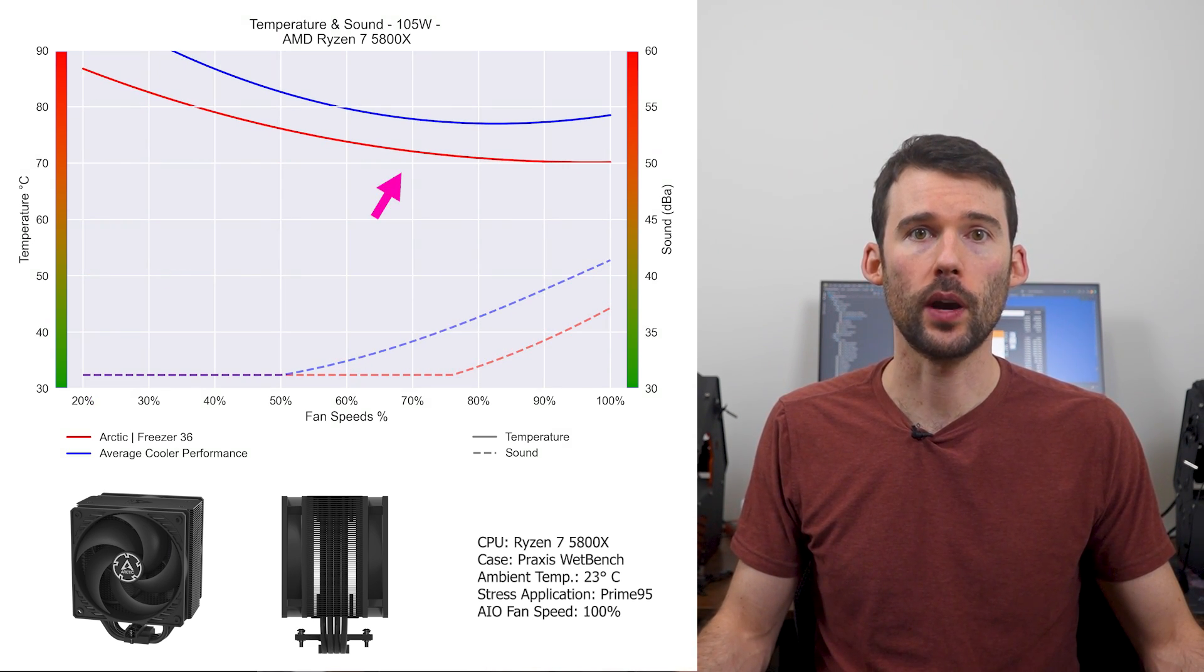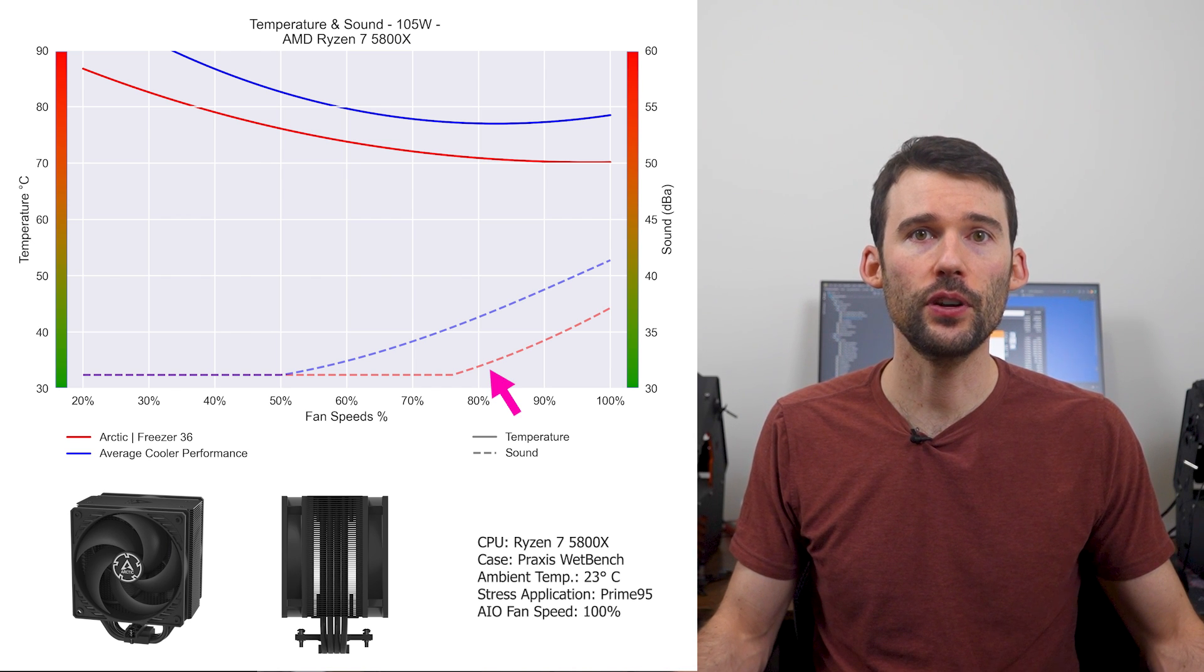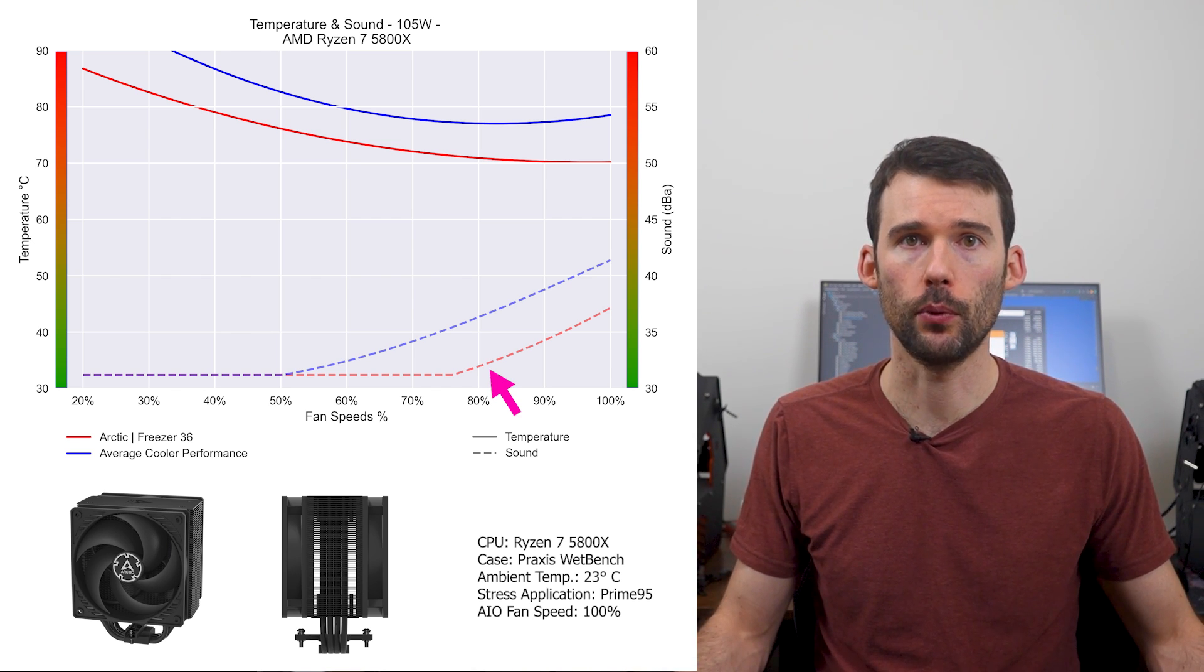Additionally, we can see that the Freezer 36 is materially quieter across the board, and not being audible until around 80% fan speed.